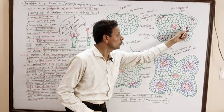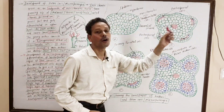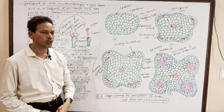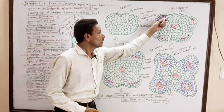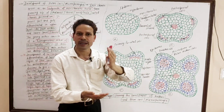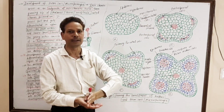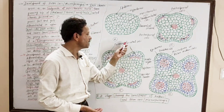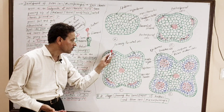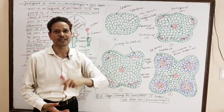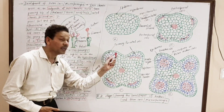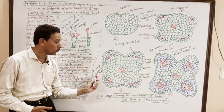These archesporial cells develop at each corner of the young anther — so 4 strips of archesporial cells develop. Soon, the archesporial cells divide periclinally, meaning the divisions are parallel to each other. As a result, two layers are formed: an outer layer and an inner layer. This outer layer, just below the epidermis, in the hypodermal region, is the primary parietal cells layer. And this inner layer is the primary sporogenous cells layer.